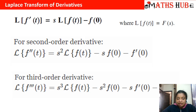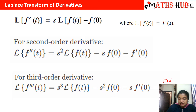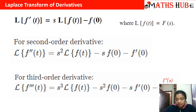Similarly, the third derivative formula is: Laplace of f'''(t) is s³ times Laplace of f(t) minus s²·f(0) minus s·f'(0) minus f''(0). We start with the same power of s and reduce the power of s by 1 at each step, beginning with Laplace of f(t), then f(0), f'(0), f''(0), and so on up to the third order derivative.